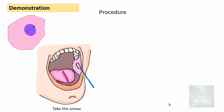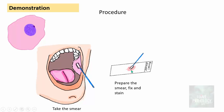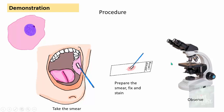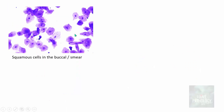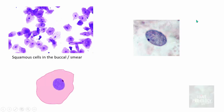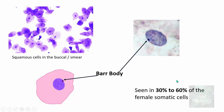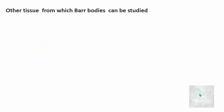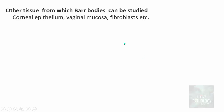The most common smears used to study Bar Bodies are buccal smears. The patient rinses and cleans the mouth, then a smear is taken from the buccal mucosa using a wooden spatula or cytobrush and spread on a glass slide. The smear is fixed, stained with the stains discussed earlier, and observed under the microscope. You see sheets of squamous epithelial cells, and under higher power you can identify the Bar Body as a darkly stained structure in the periphery of the nucleus. Bar Bodies are seen in 30 to 60 percent of female somatic cells. They can also be studied from corneal epithelium, vaginal mucosa, fibroblasts, and peripheral blood.